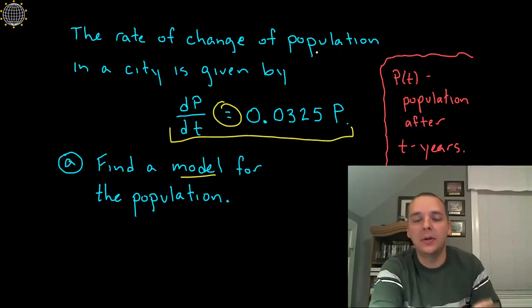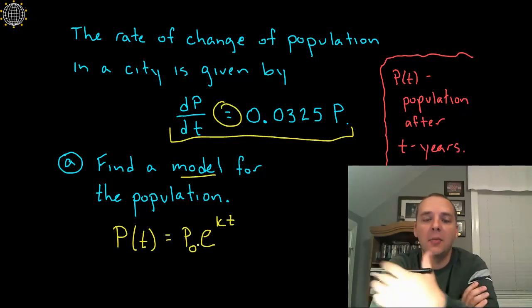So anyway, we can jump right to it. We've seen this in the last video that this differential equation right here would lead us to a generic exponential model that looks like this: capital P of T equals P sub zero, that's your starting population, times E to the KT. So this is your generic model here.